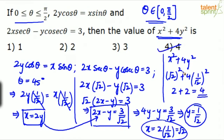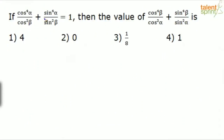Next question: if cos⁴α/cos²β + sin⁴α/sin²β = 1, then find the value of cos⁴β/cos²α + sin⁴β/sin²α. The options are 4, 0, 1/8, and 1. Solving this the regular way would be lengthy — it may take over a minute — because there are multiple formulae and identities to consider.